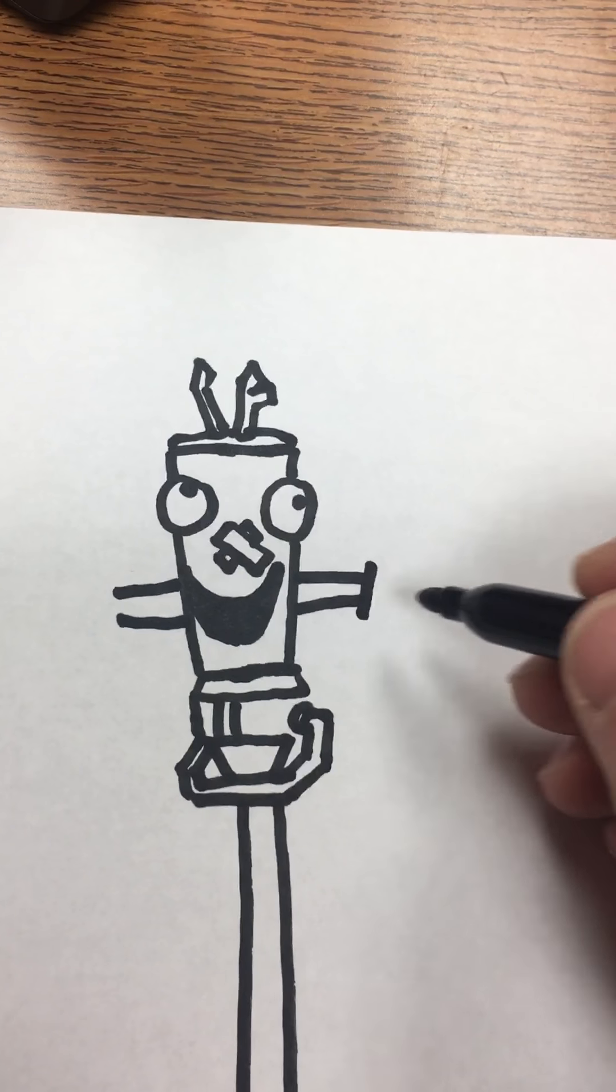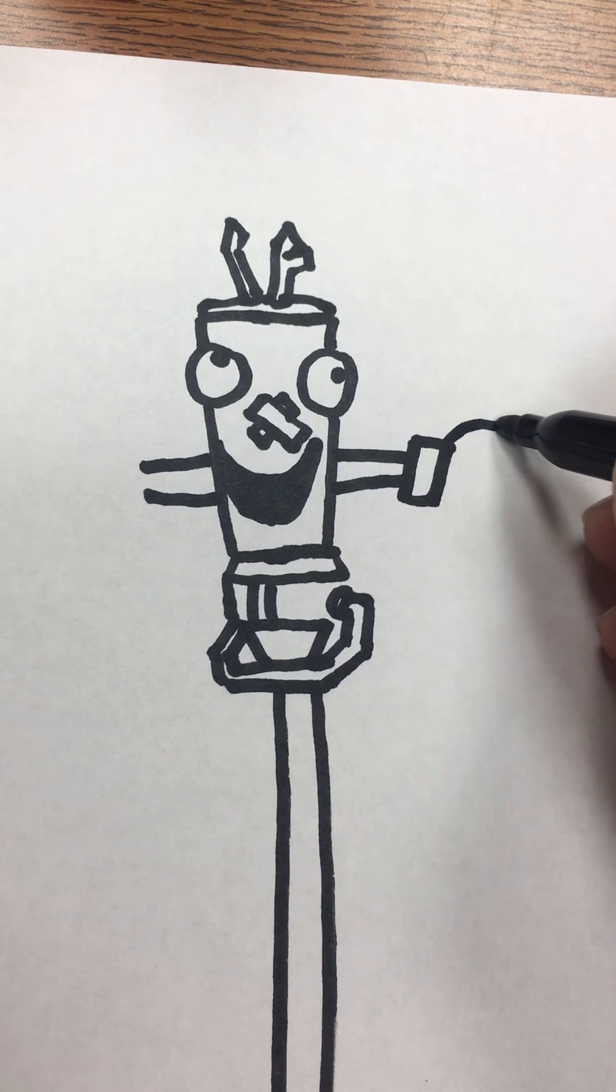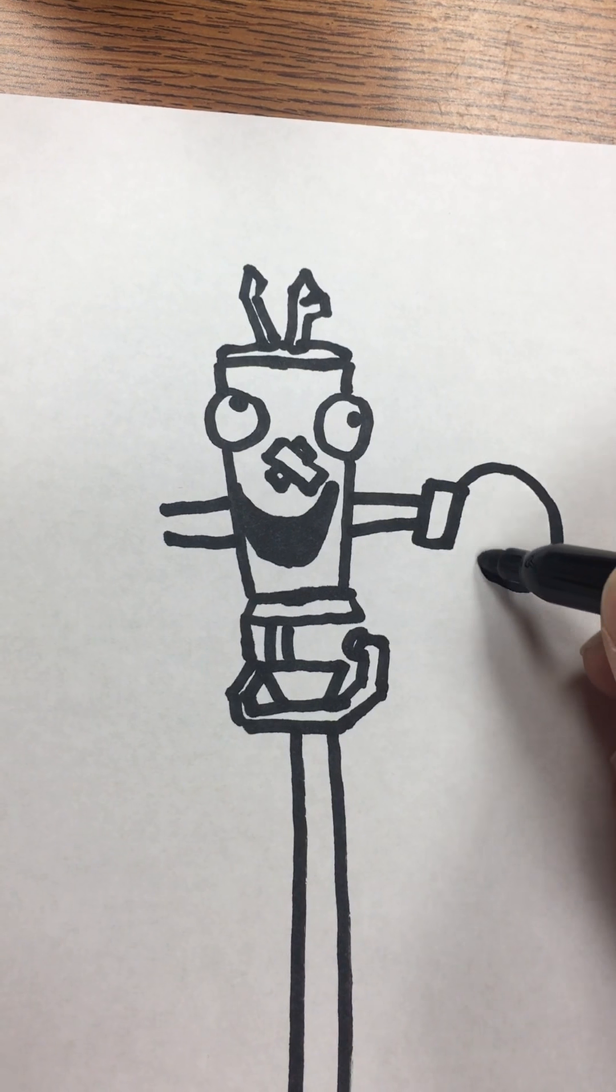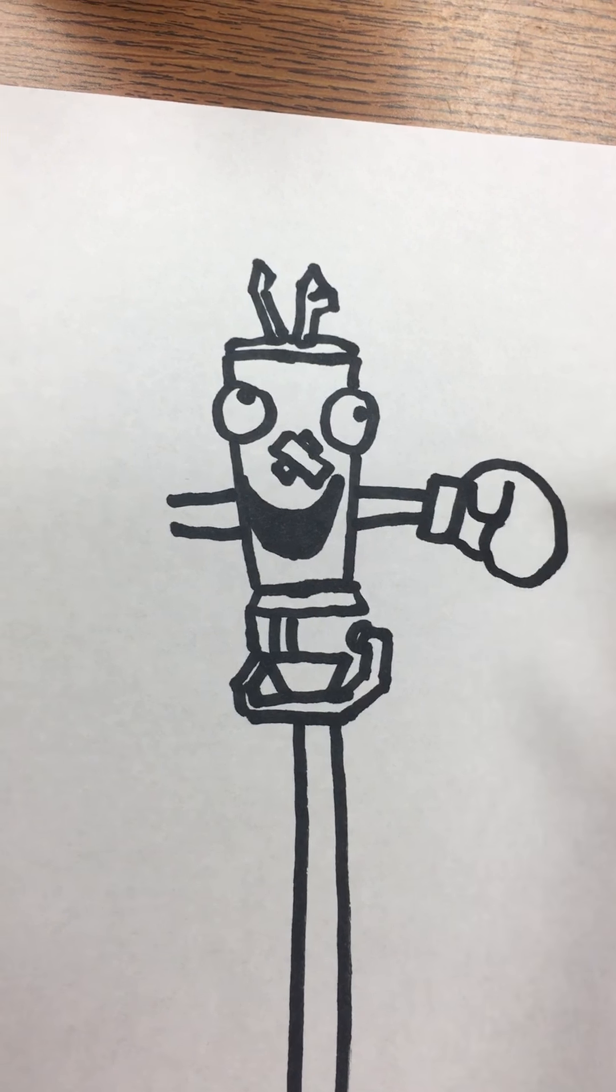Boxing gloves, I'll put the little collar on there first. Kind of like a rough circle here for this. And then here's his thumb.